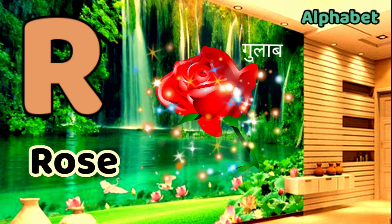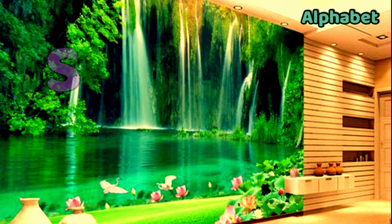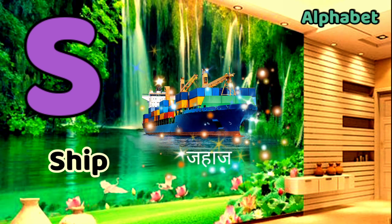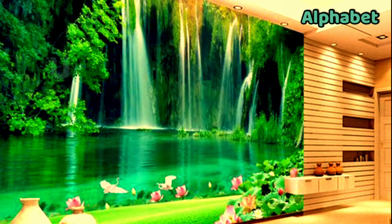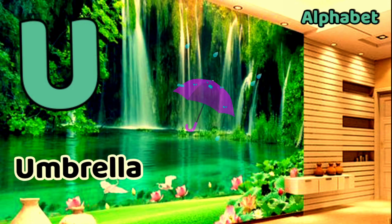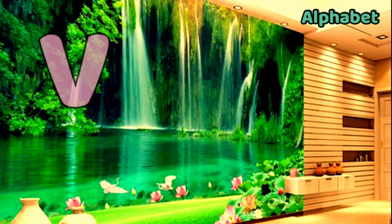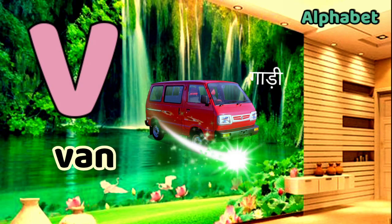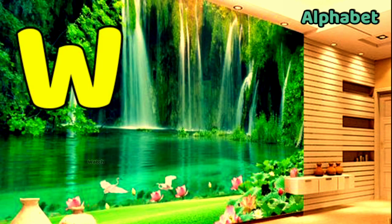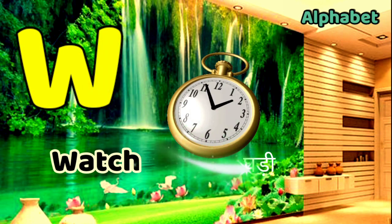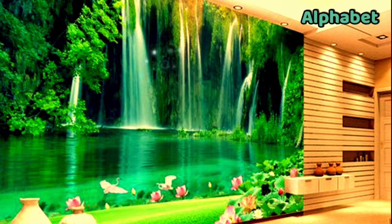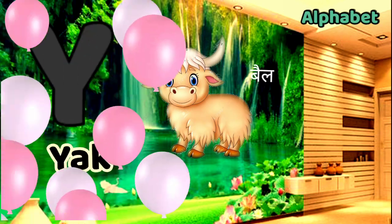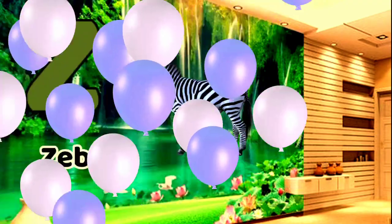R for rose, S for shape, T for tiger, U for umbrella, V for wing, W for watch, X for axelophon, Y for yacht, Z for zebra. Thank you.